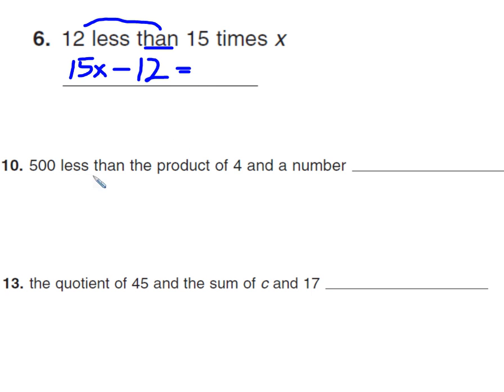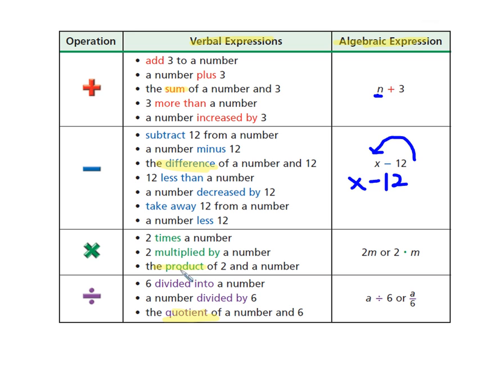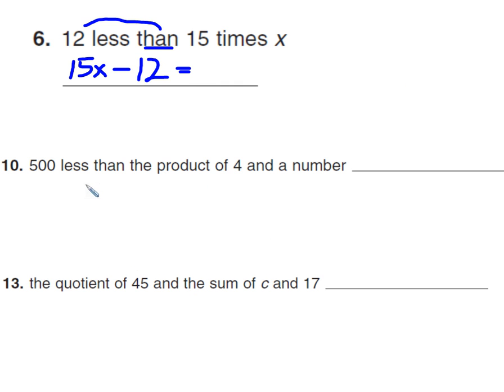500 less than a product of 4 and a number. Product means, if we remember from our chart, product means multiplication. So the product of 4 and a number. Put x for the unknown number. 500 less than that, minus 500.